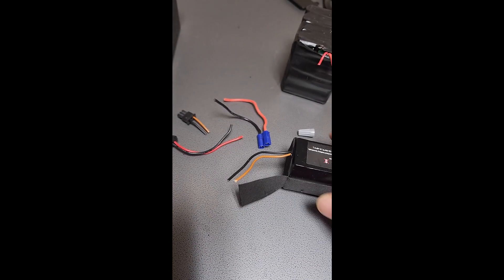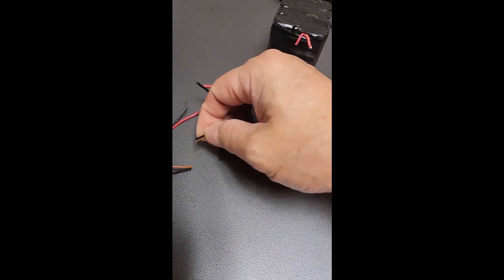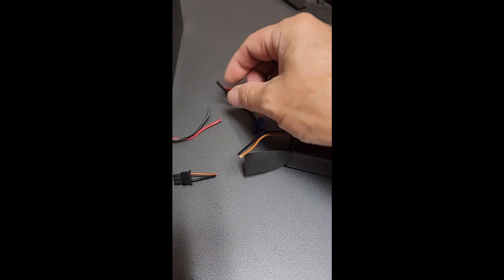So now I have the wires cut. The next step is to basically strip a little bit wire from here and then connect them together.